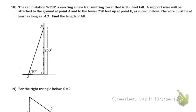Problem 18. The radio station west is erecting a new transmitting tower that is 280 feet tall. A support wire will be attached to the ground at point A and to the tower 250 feet up at point B, as shown below. The wire must be at least as long as side AB. Find the length of AB. So since this is a right triangle, I see this right angle down here, I can use SOH CAH TOA. I know my opposite side. I want to know my hypotenuse, so I'm going to use sine. So sine of 70 equals opposite over hypotenuse, and you're going to solve for hypotenuse. For this problem, your answer is going to be 266 feet.